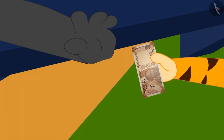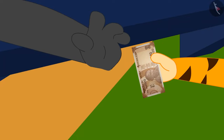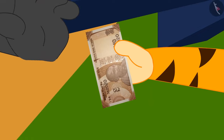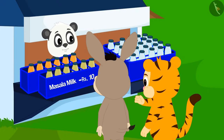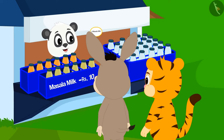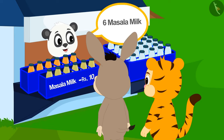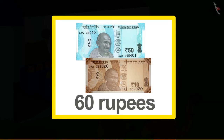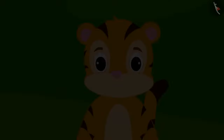Sher Khan saw that Golu had written on the tray: Masala milk, rupees 10. He got excited and immediately asked for six bottles. After finishing the milk, Sher Khan gave 10 rupees to Golu. But Golu told him that he had taken six bottles, so he would have to pay 60 rupees.